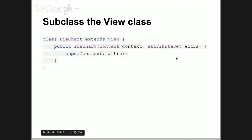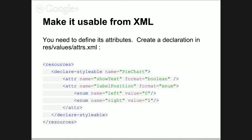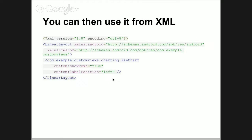When the view is created, you get an attribute set. That is a way for Android to pass to you whatever attributes somebody has declared in the XML. You can decide that you want to have an attribute with name equal to 'show text', format is Boolean, and you can declare what you can possibly have. Then you can go fish it out - this is one way to use your view.